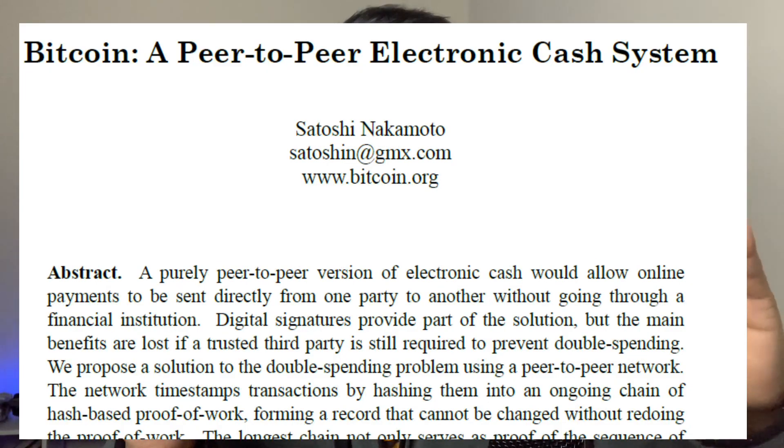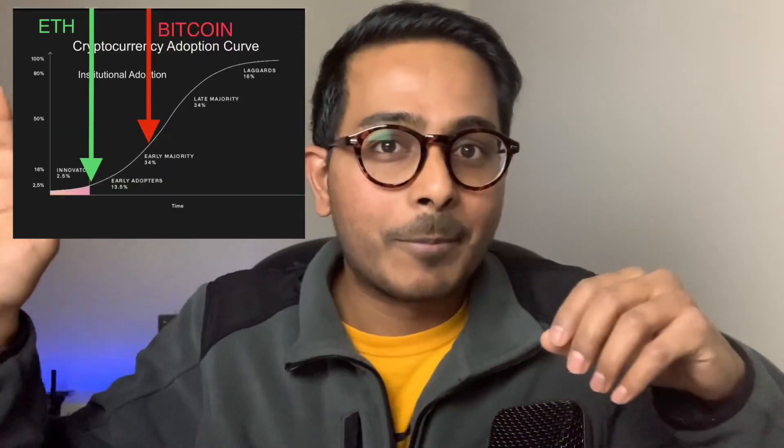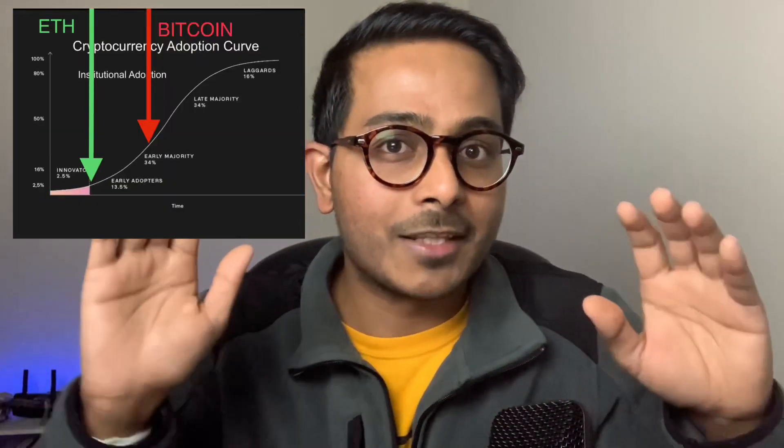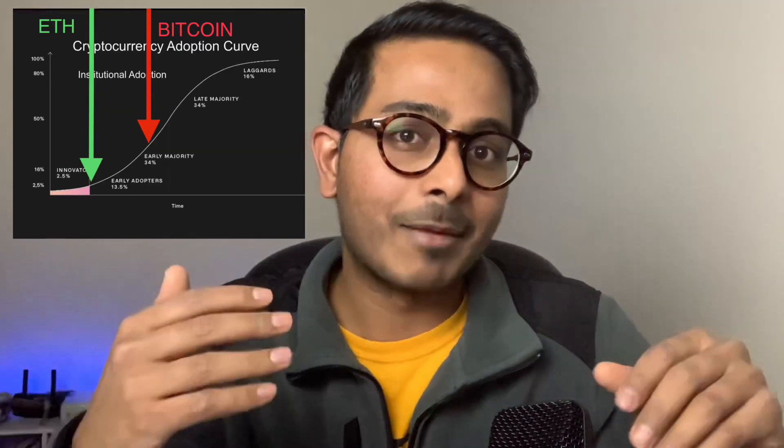In 2008 and 2009, an anonymous entity called Satoshi Nakamoto released a white paper called Bitcoin on Blockchain, which drew out some of the flaws in the current financial system and the way we transact with the current banking system and financial institutions we have in place.